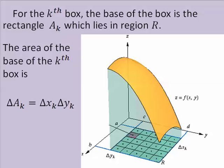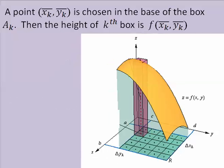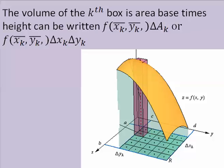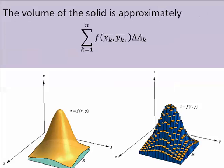For each box, the base would be change of x, change of y, and the height can be f evaluated at some point in the base of the box. So the volume would just be height times base, and we can add the boxes up.